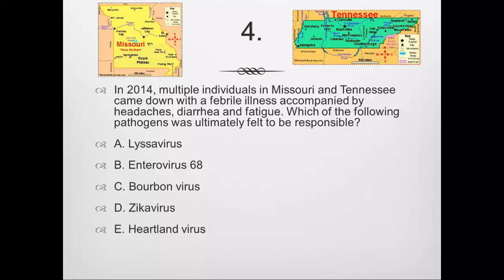Question number 4: In 2014, multiple individuals in Missouri and Tennessee developed a febrile illness with headaches, diarrhea, and fatigue. Most people correctly identified the answer as E, Heartland virus. Heartland virus is a phlebovirus in the Bunyaviridae family — the same family as Rift Valley fever — first described in 2012. The exact vector is not completely known, but recent data suggests an association with Amblyoma americanum, the lone star tick.